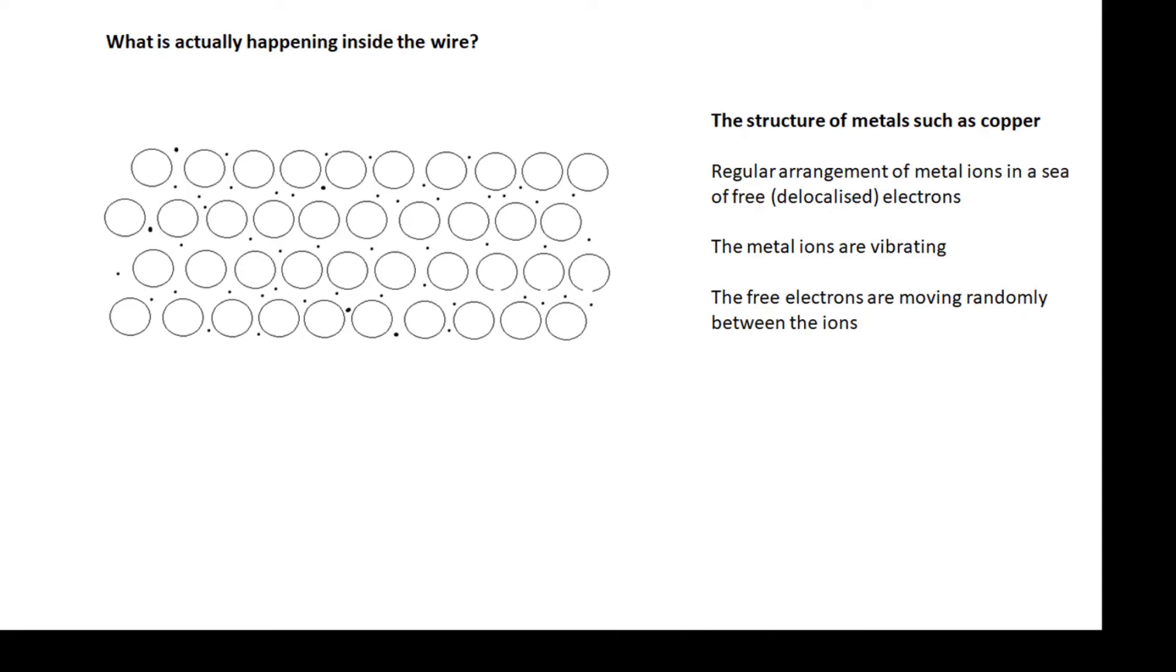If we put a potential difference across the wire, in other words if we make one end of it positive and the other end negative, then what will happen is that the electrons will drift through the wire towards the positive terminal.